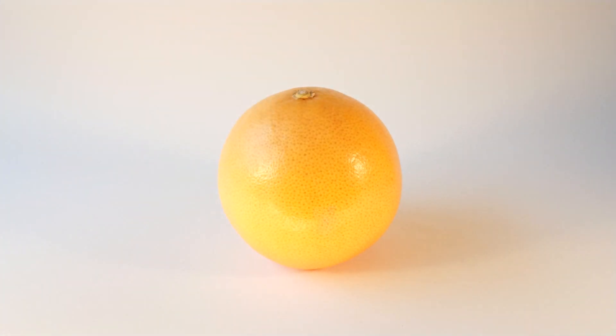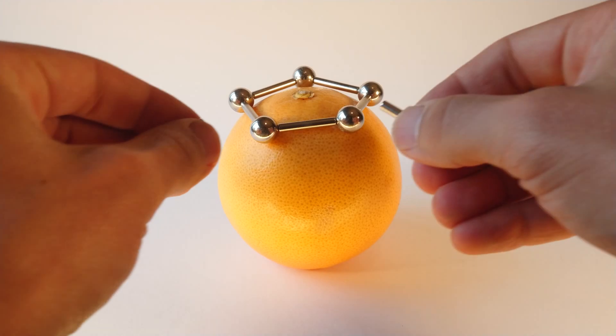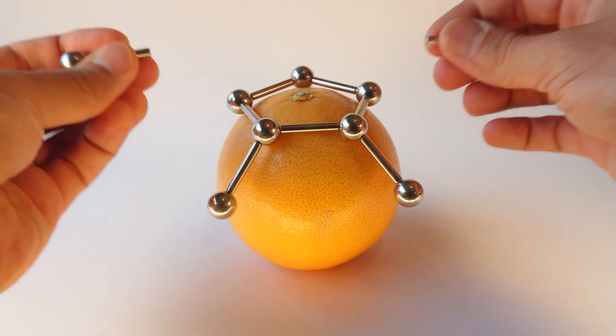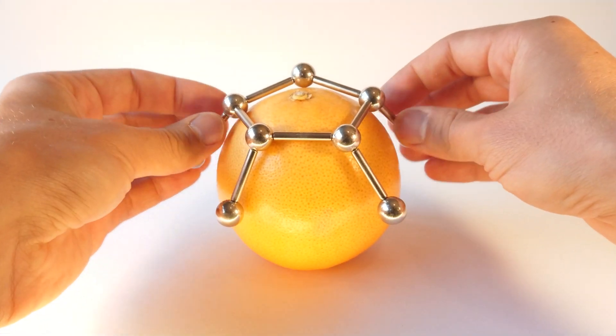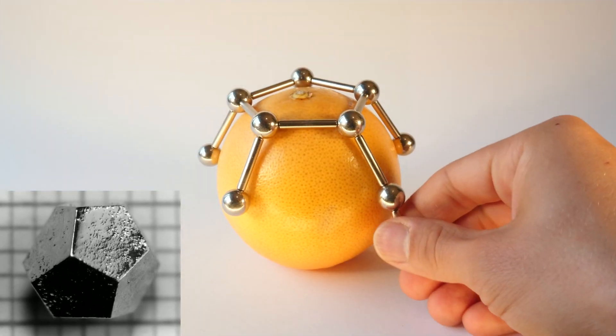Dodecahedron consists of twelve regular pentagons, with three of those pentagons meeting at each corner. There are a number of quasicrystals that have a dodecahedral shape.